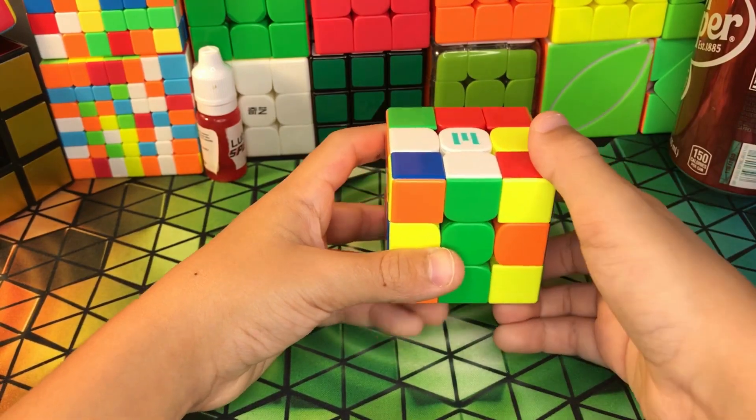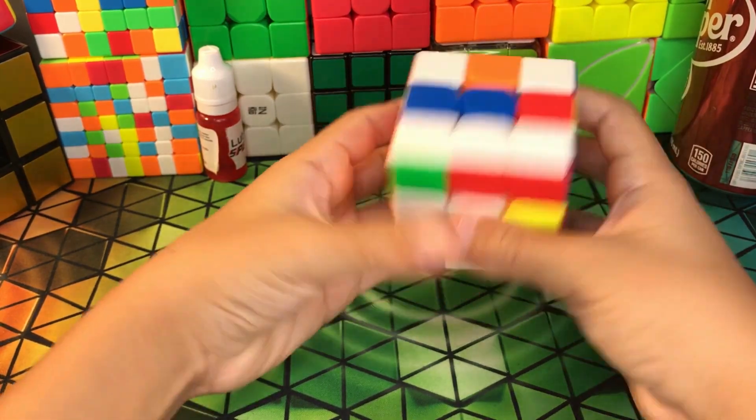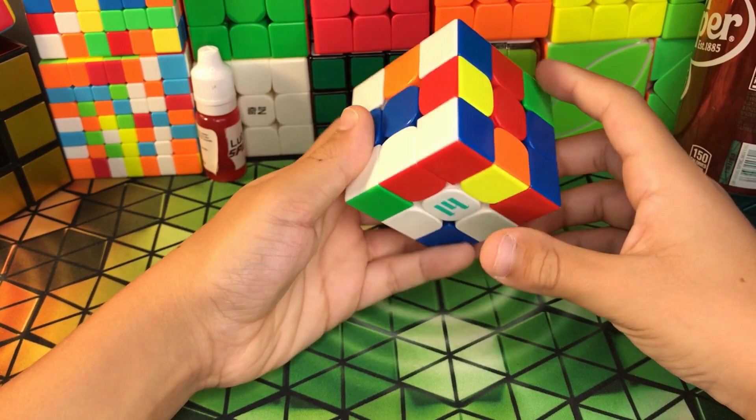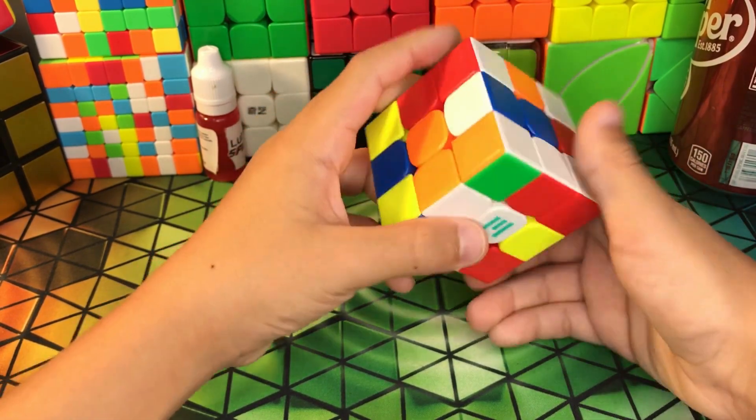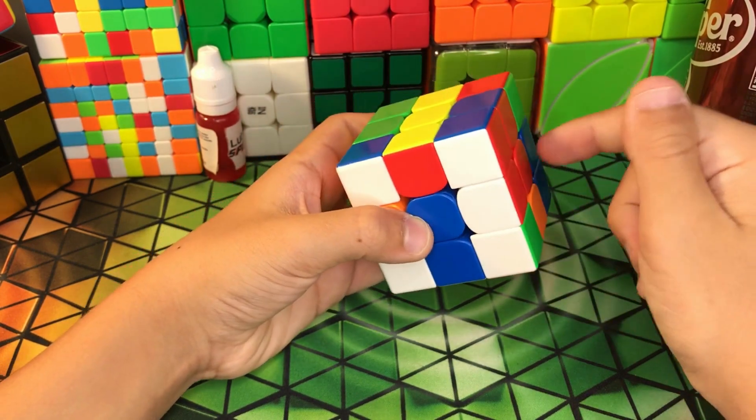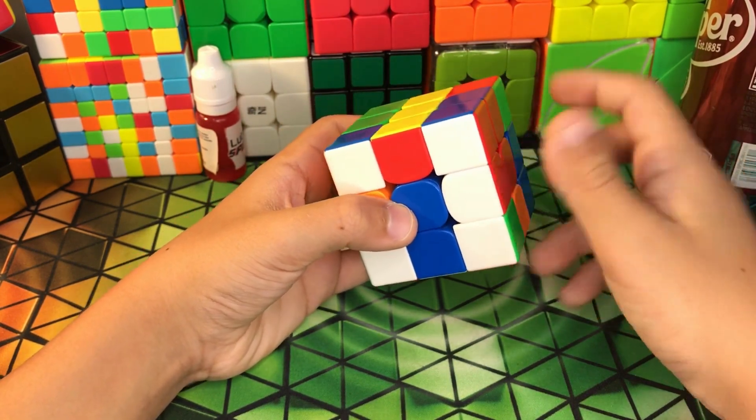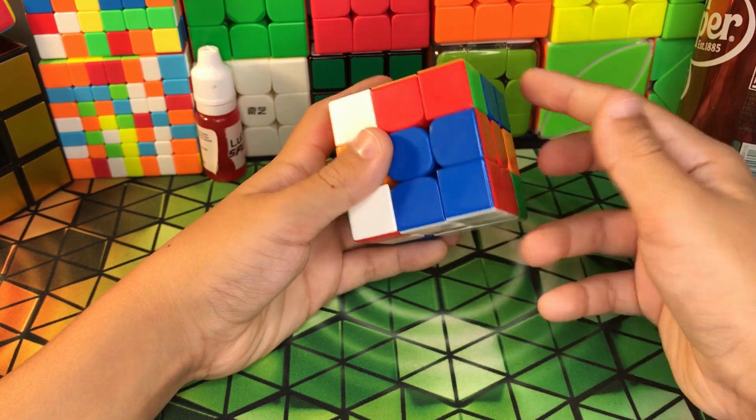Now to solve this, all you have to do is put the white side on the bottom, and then insert this blue cross piece like that. Then insert this red cross piece right here, just like that, and you have a double X cross.